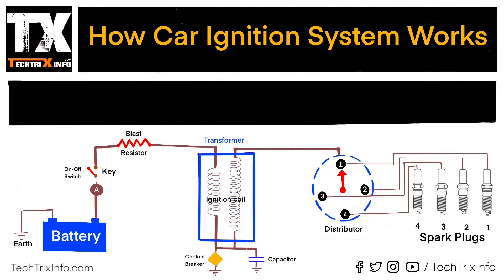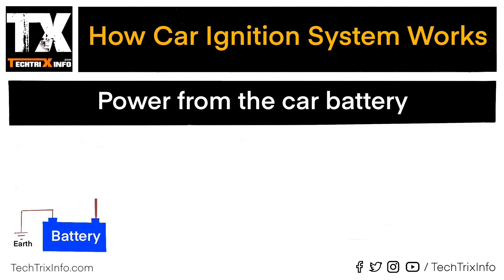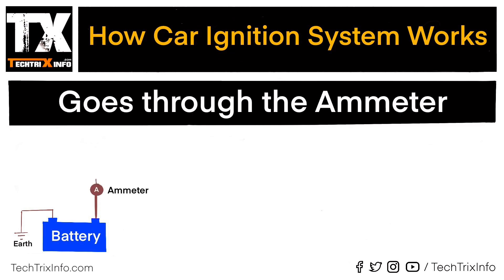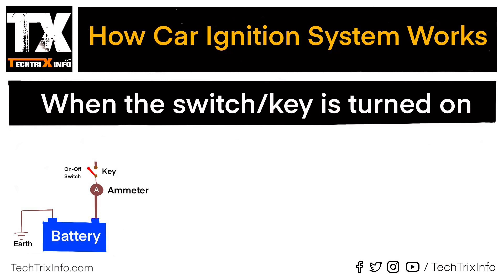How car ignition system works, explained in one minute. On the screen, what you're seeing is a car ignition system electronic circuit. Let's learn how it works. Power from the car battery goes through the emitter when the switch or the key is turned on.